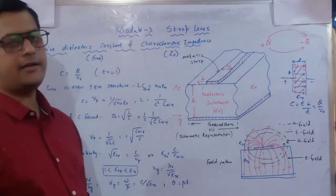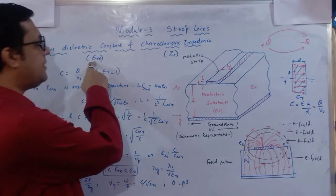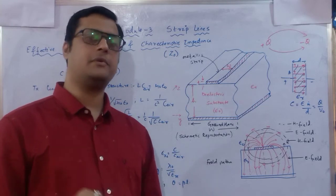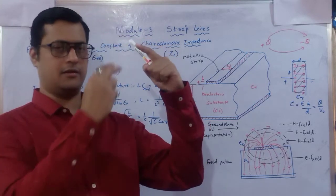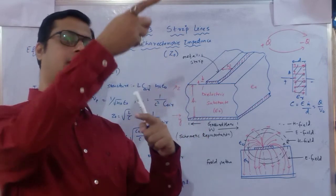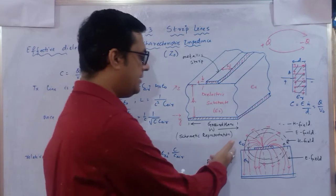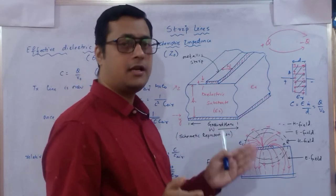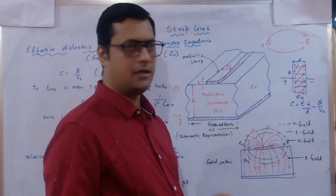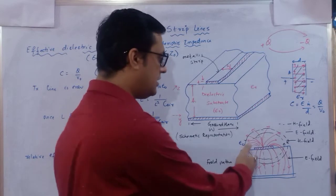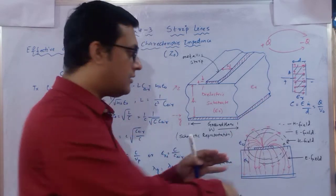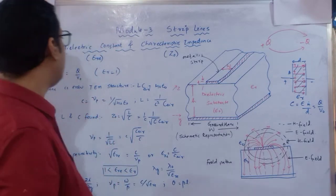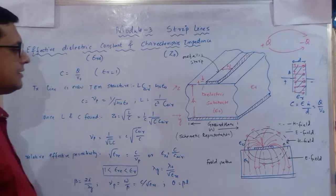We need to calculate the effective dielectric constant, denoted epsilon_re (relative effective permittivity). It is called relative because there are three different media — conductor, substrate, and conductor — and air medium above the conductor. So epsilon₀ is for air and epsilon_r is for the substrate medium.